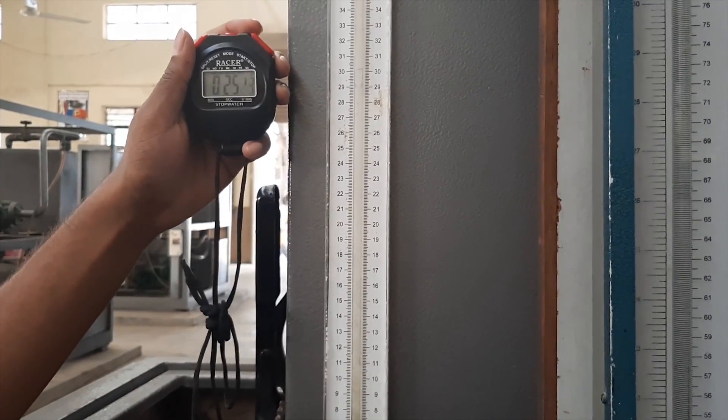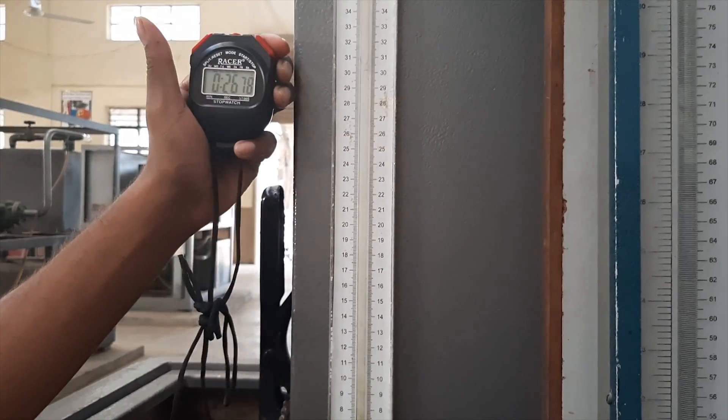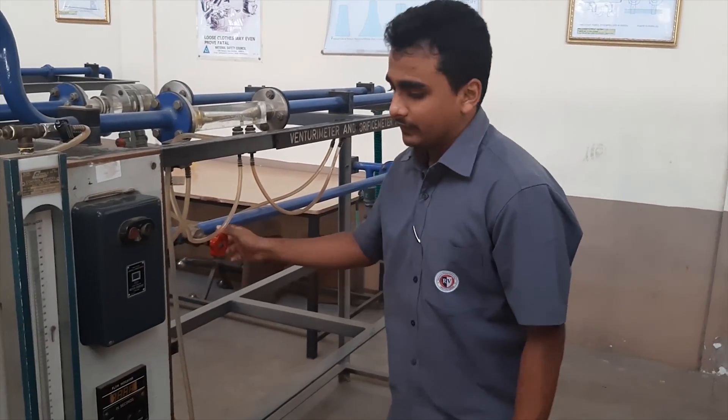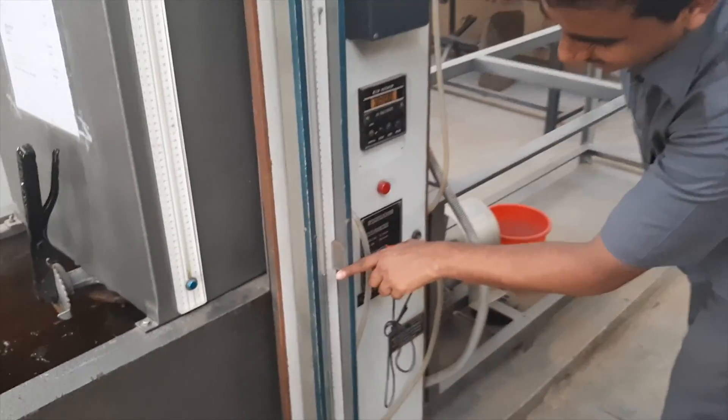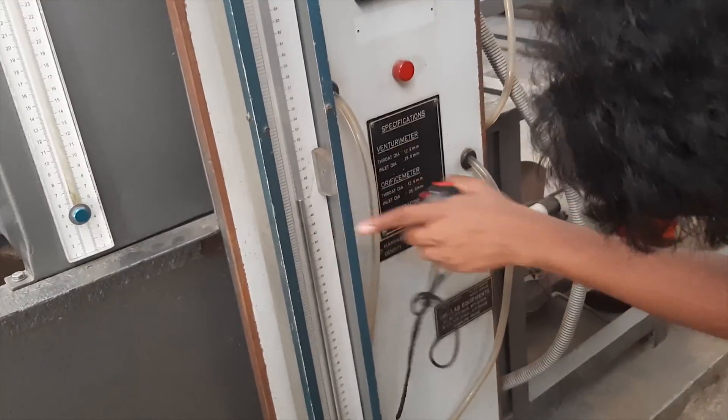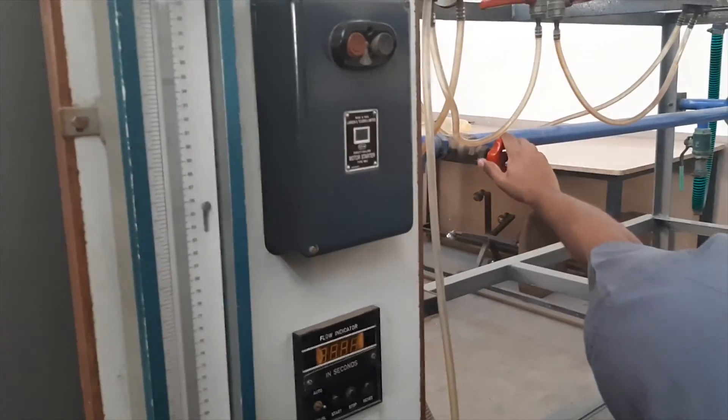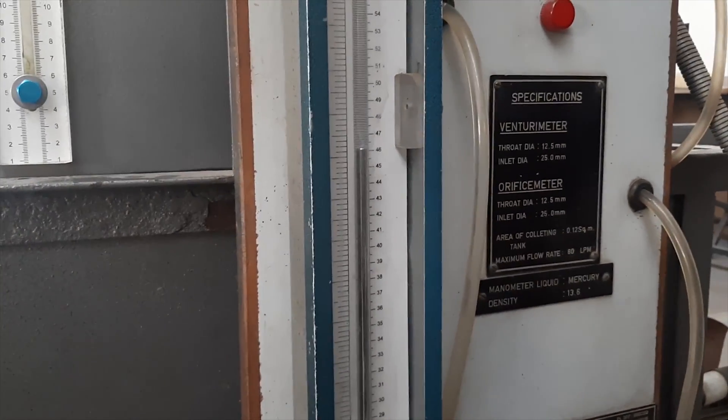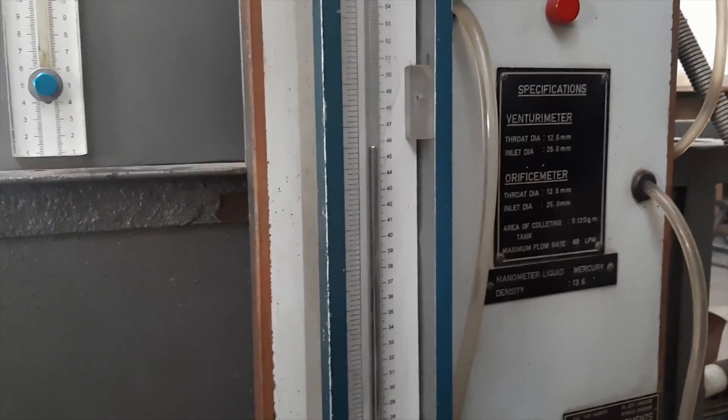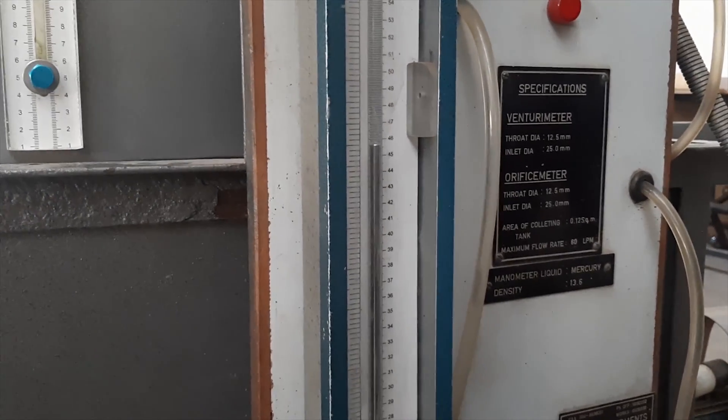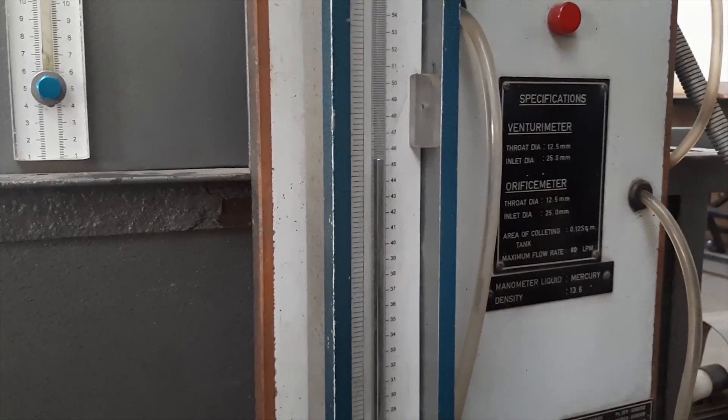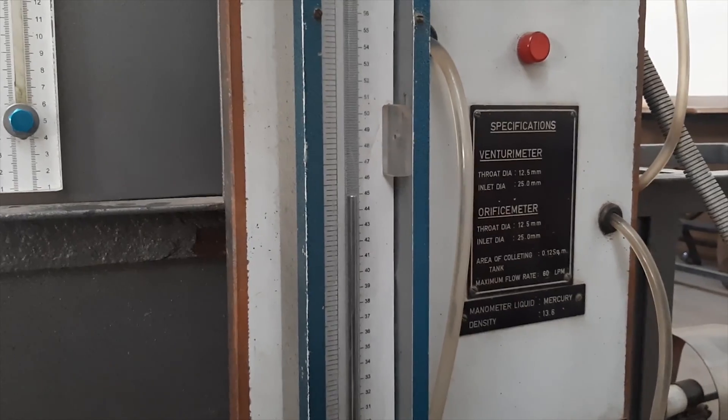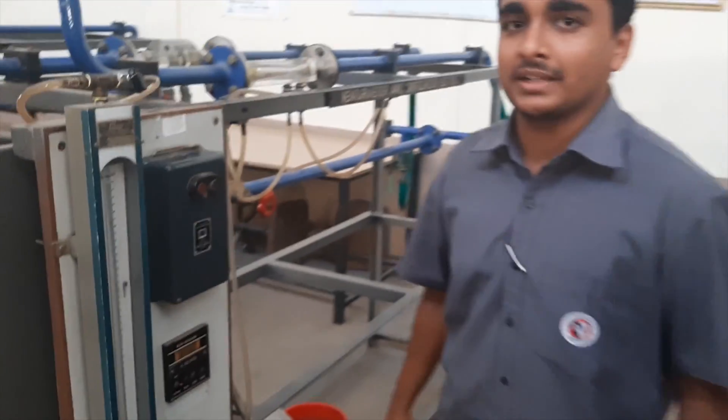As you can see, the water is approaching 30 centimeters and the stopwatch is stopped. The flow control valve is further closed a bit so that there will be a drop in the mercury level. The water level was 47 centimeters and is now 45 centimeters in the manometer. Now the procedure is repeated again.